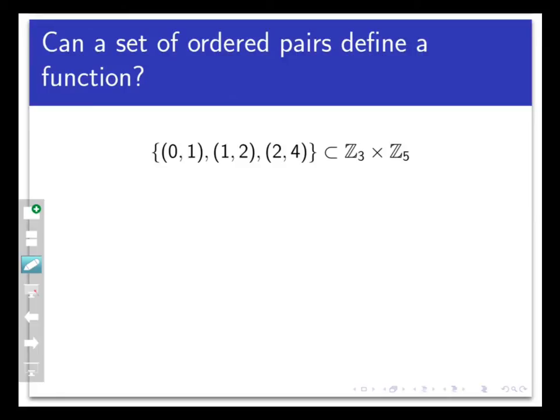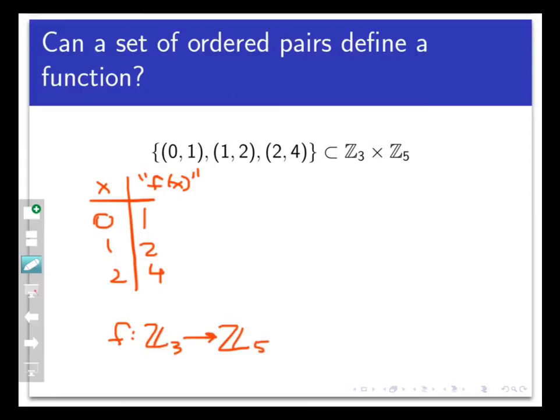As a table, this would say that 0 maps to 1, 1 maps to 2, and 2 maps to 4. In other words, I can start with this set of ordered pairs in Z3 cross Z5, and in this case turn it into a function from Z3 to Z5 by defining f(0) equals 1, f(1) equals 2, and f(2) equals 4.